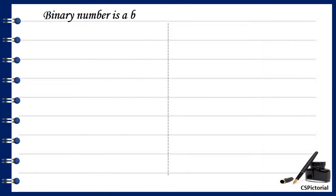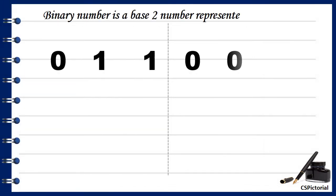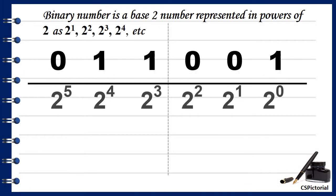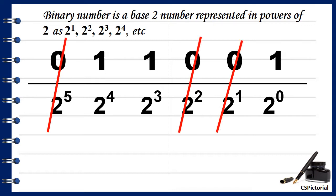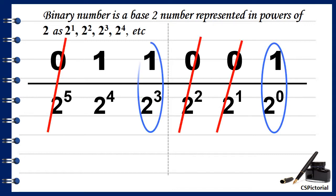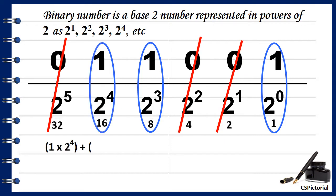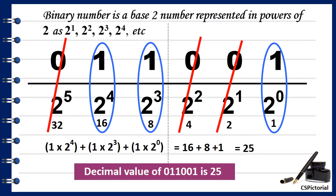Similarly, a binary number is written as powers of 2. Cancel out the zeros in the number. Multiply the ones with the corresponding place value. Here it is 1 into 2 to the power 4, 1 into 2 to the power 3, and 1 into 2 to the power 0. Add the results. So the decimal value of 011001 is 25.